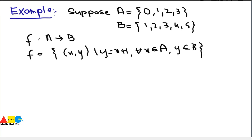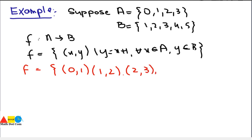So this is the function. In terms of ordered pairs, we can write this function as: if x is 0 then y is 1, because y = x + 1. If x is 1 then y is 2. If x is 2 then y is 3, and if x is 3 then y is 4. These are the ordered pairs because we have only 4 first elements — the elements of A.